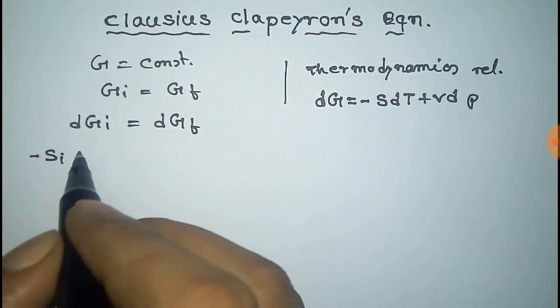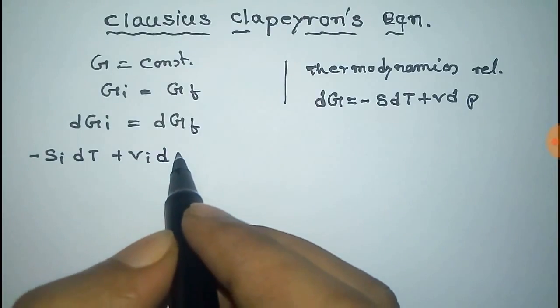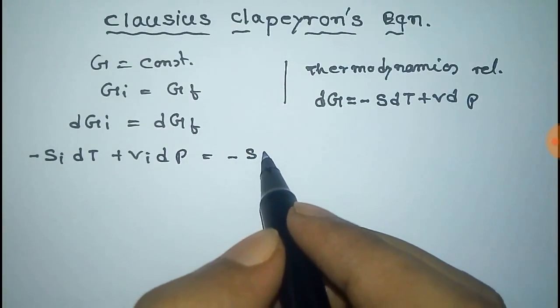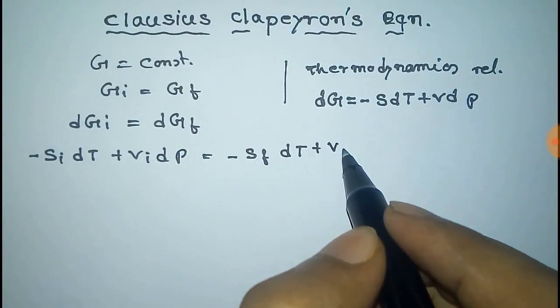So dGi = -Si dT + Vi dP is equal to dGf, that is -Sf dT plus Vf dP.